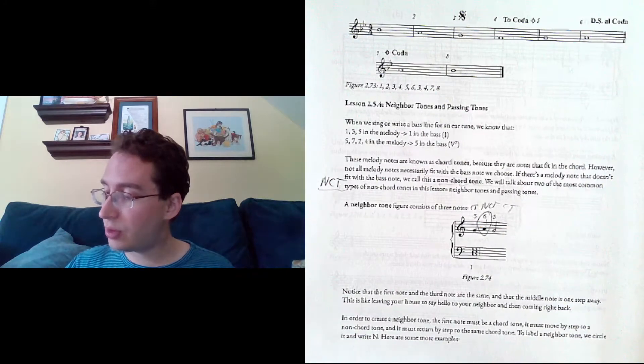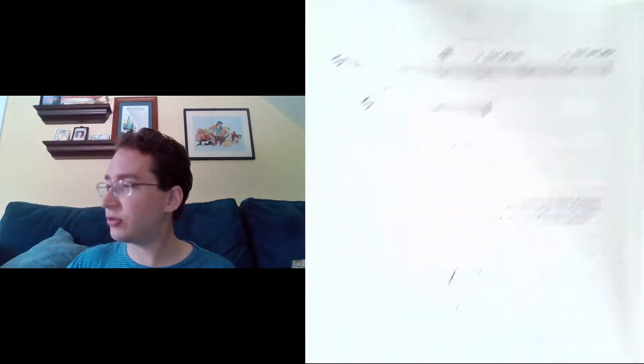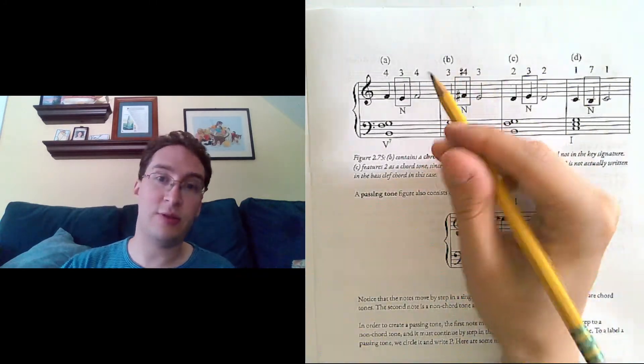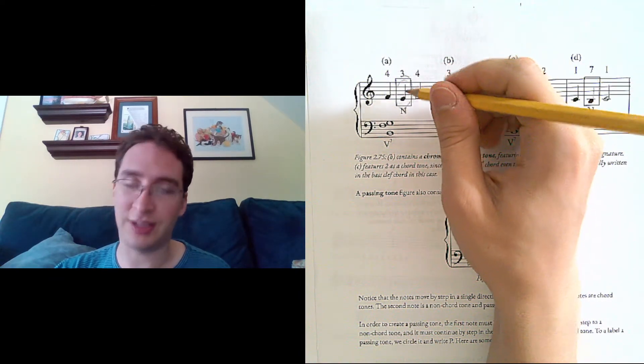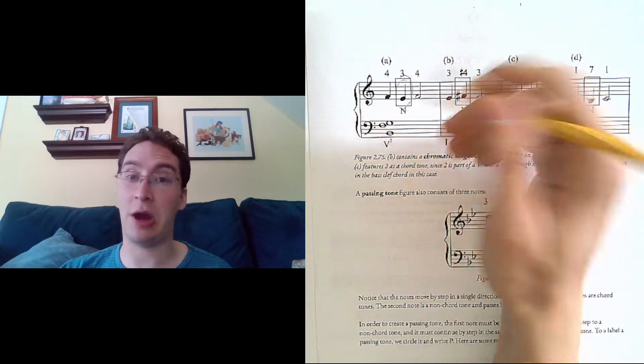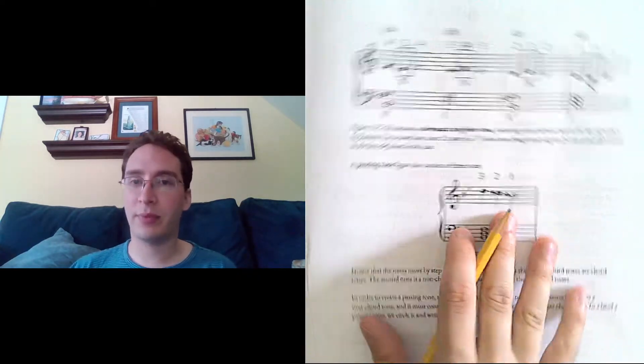So, in order to label a neighbor tone, you would circle it and write N. Couldn't figure out how to do circles. If you're doing this by hand, I would recommend just doing something like that. You don't need to do a fancy box, but you can.